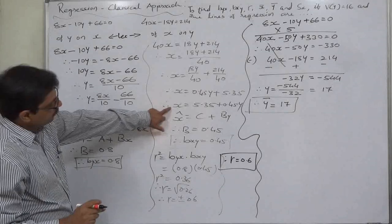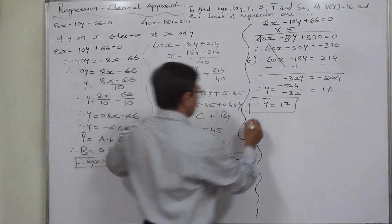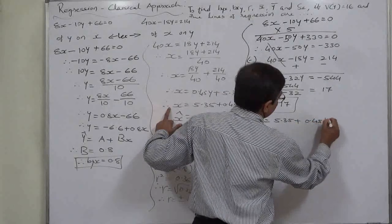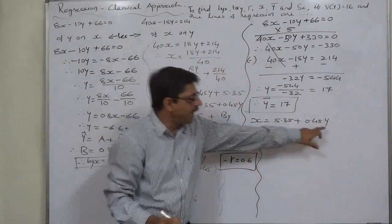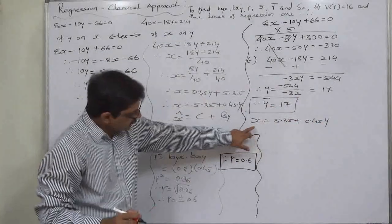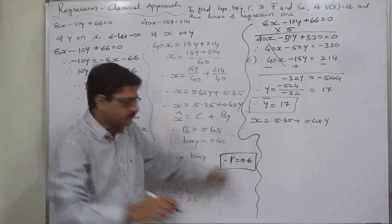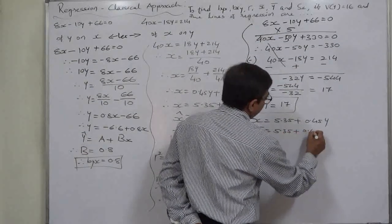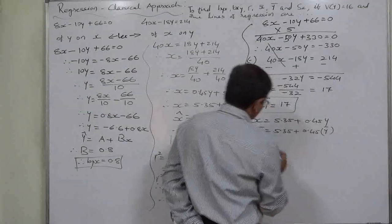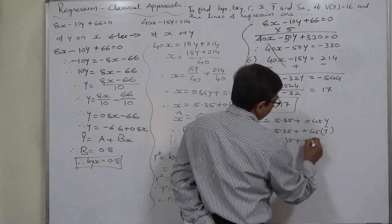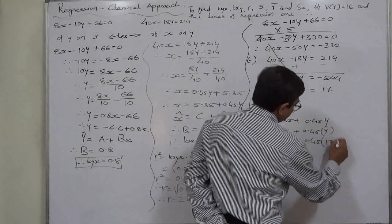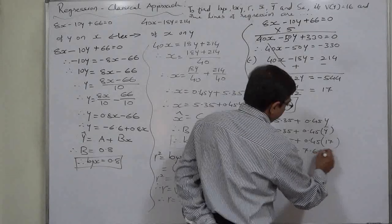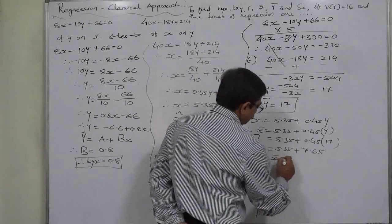Using the formula x = 5.35 + 0.45y, substituting ȳ = 17 gives x̄ = 5.35 + 0.45 × 17 = 5.35 + 7.65 = 13. So x̄ = 13.